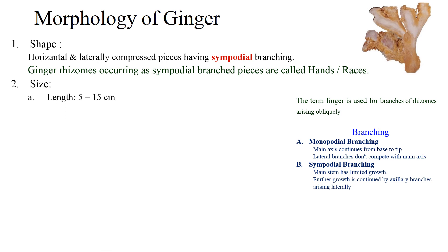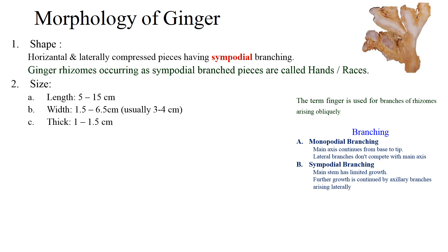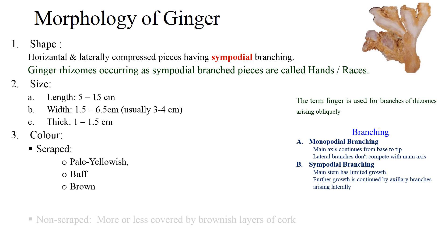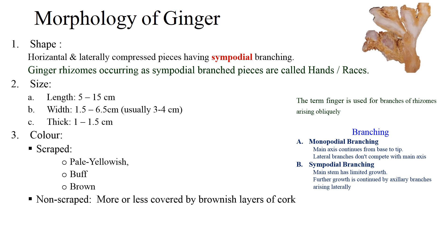Size: the size of ginger is variable. Zingers are 5 to 15 cm in length, 1.5 to 6.5 cm in width, and 1 to 1.5 cm in thickness. Color: the scraped ginger are pale yellowish, buff, or brown in color. Non-scraped ginger are more or less covered by a brownish layer of cork. Gingers are aromatic in odor and pungent in taste.